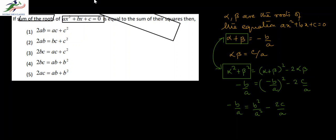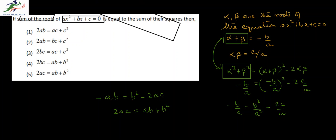Multiplying both sides by a², we get -ab = b² - 2ac, which gives us 2ac = ab + b². In the options, option number 5 gives us 2ac = ab + b², which is the correct choice.